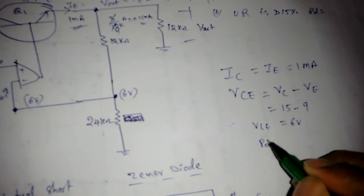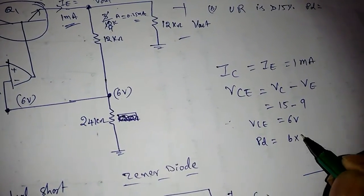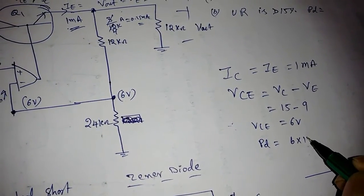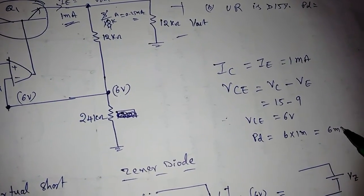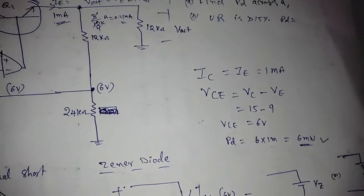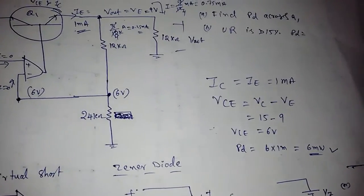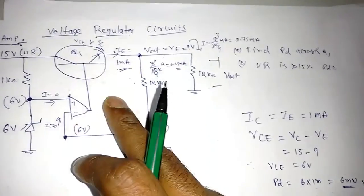What is the power dissipation? 6 times 1 milli ampere, so it will become 6 milli watts is the power dissipation across this transistor. This is how to find the power dissipation.